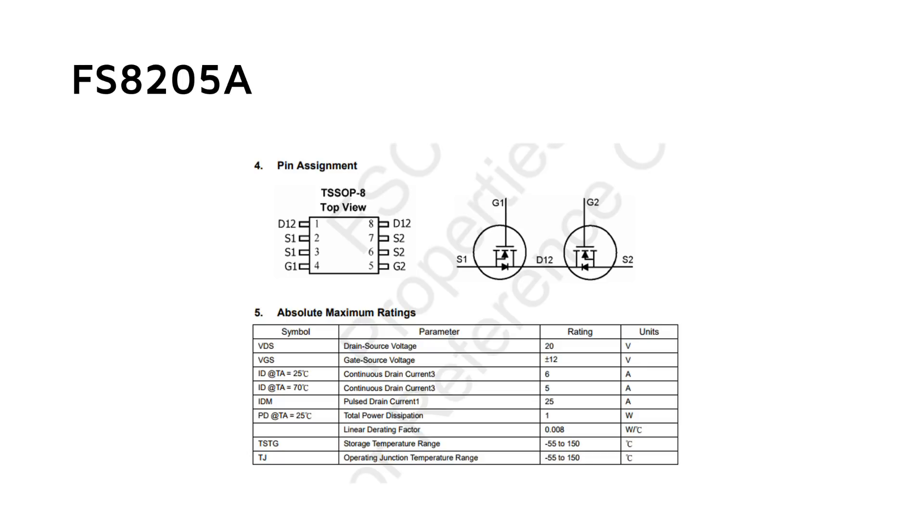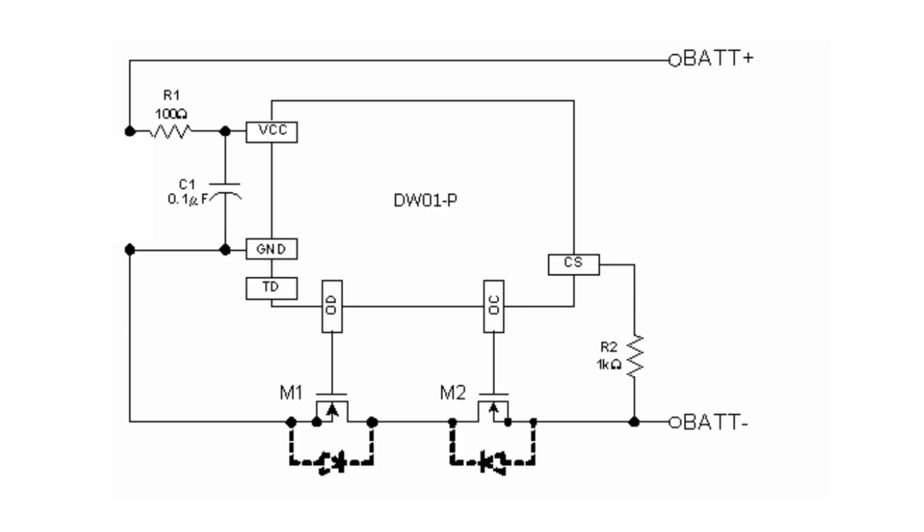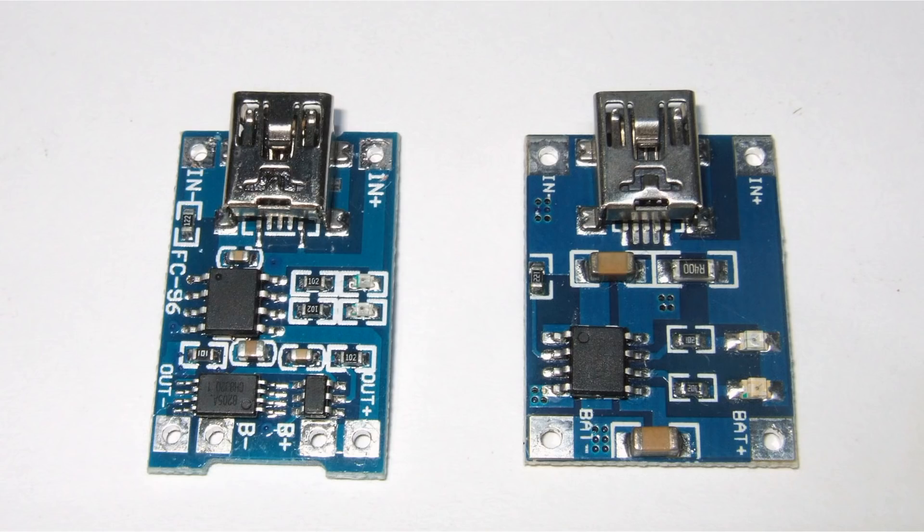Also here, we can buy a cheap chip, which contains these two MOSFETs, already connected in the right order. It is called 8205. With these two chips, additional two resistors, and one capacitor, we can build a whole protection circuit. In my video about solar chargers, I used two different versions of these small TP4056 LiPo charger modules. The difference of the two is exactly these two chips.